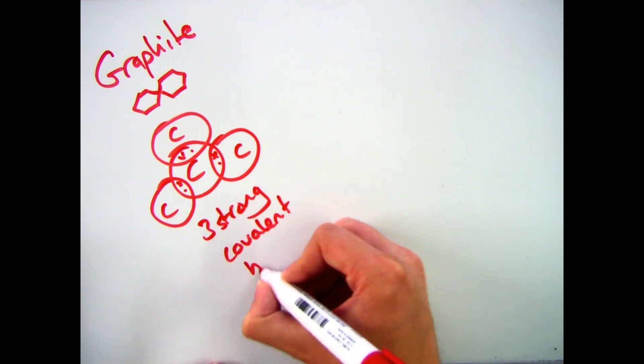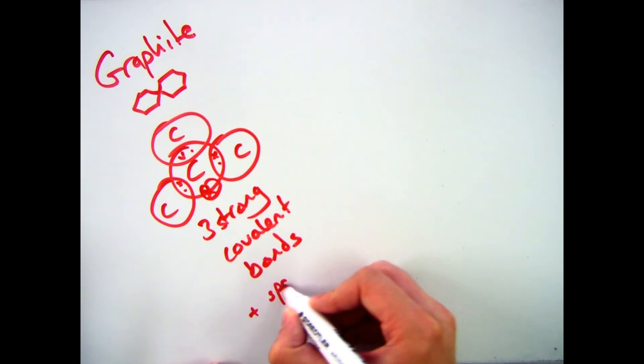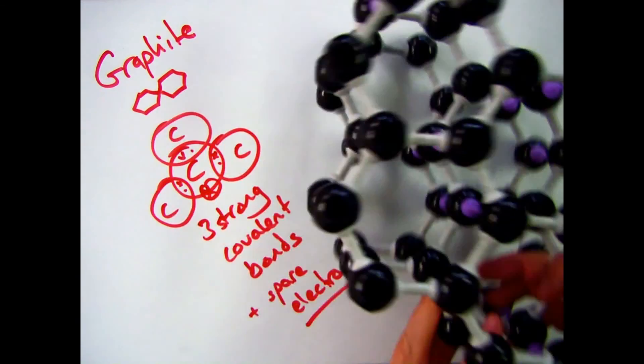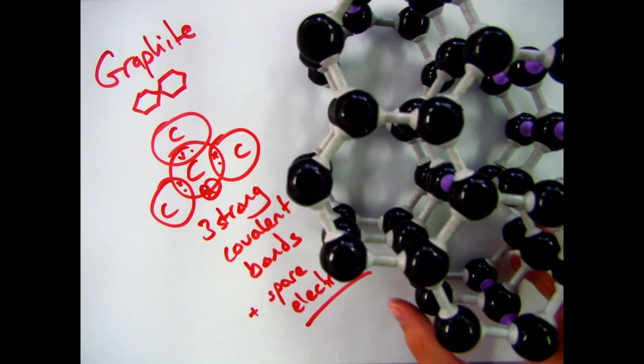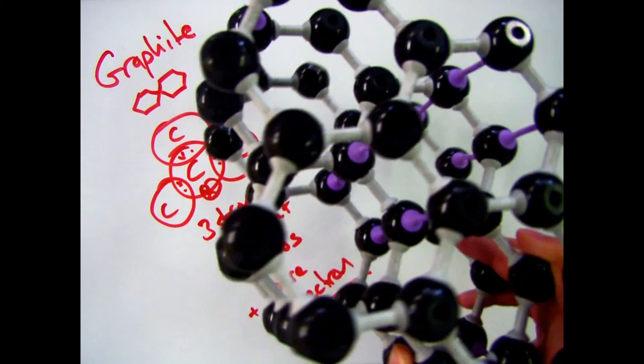Now because there are only three bonds, it means that every carbon atom has a spare electron. And that's a key thing when we talk about the properties in a later video. And then the final thing that you need to know is that graphite itself exists in layers. So you have your three bonds and then there are layers between different sheets of graphite.